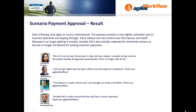Cash is flowing once again at Cronus International. The payment process is now tightly controlled and no incorrect payments are slipping through. Harry now has control over the Treasury and Jeff is no longer getting in trouble. Annette is also enjoying the structured process as she can no longer be blamed for posting incorrect payments.